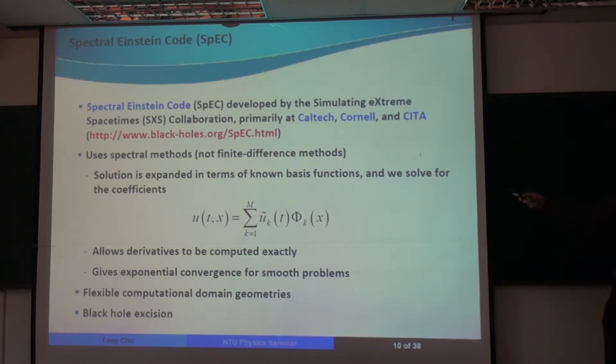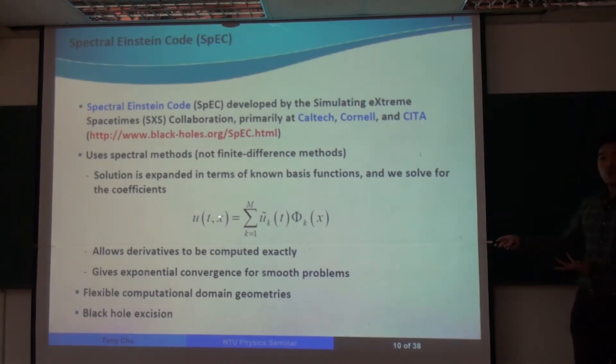As the name implies, the spectral Einstein code uses spectral methods. And these are different from the more traditional finite difference methods. So in spectral methods, we expand the solution we want to solve for, that's called u of tx, in terms of known basis functions, here they're big phi, and what we solve for are the expansion coefficients, u tilde.